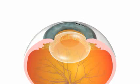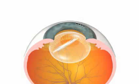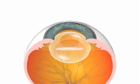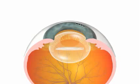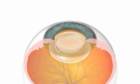An artificial lens, or intraocular lens, is inserted through the cut into the lens capsule. The lens is folded so that it can pass easily through the tiny opening. Once inserted, the artificial lens unfolds itself and replaces the old lens.